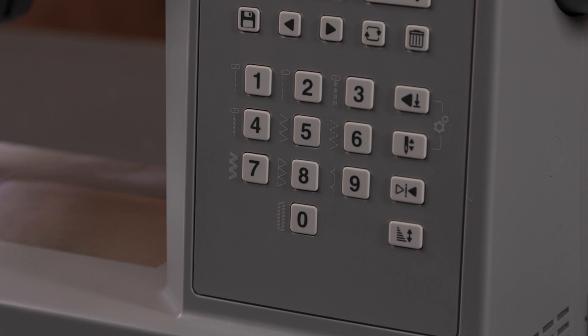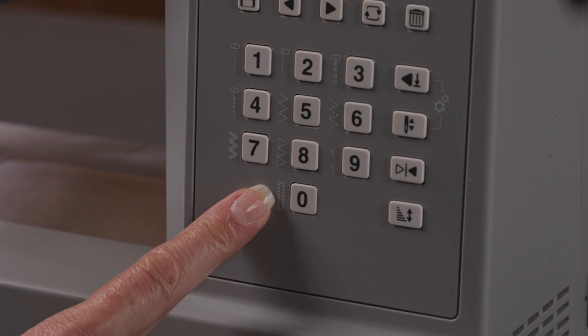Now let's see how to do a buttonhole on your machine. There are nine different styles to choose from. One is the basic bar tack buttonhole which is right here with your direct selection buttons on the front of the machine.